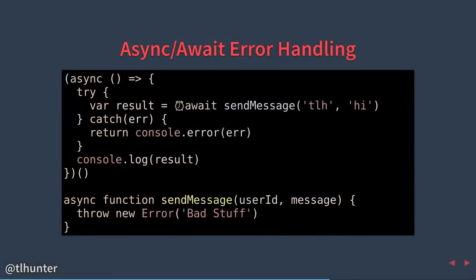We're sort of back to the try/catch of yesterday for error handling. We wrap our call to sendMessage in a try/catch. Within the try/catch we're able to use the 'throw new Error' syntax we use with synchronous code, and that error will actually get caught by our try/catch in our async code. Of course you can't throw an error within a callback and expect the error-first callback to be called with error, but with this async/await code we are able to do that.